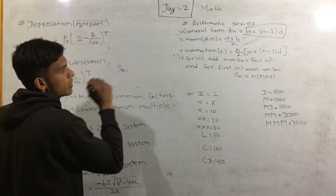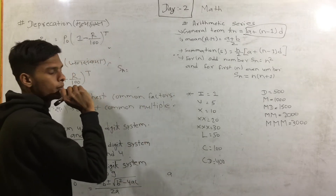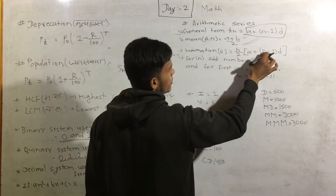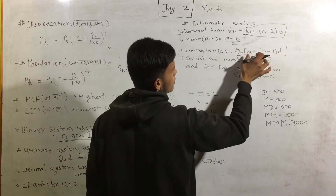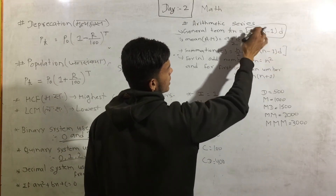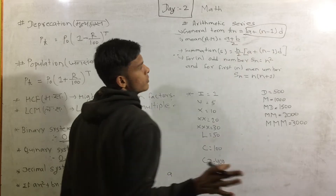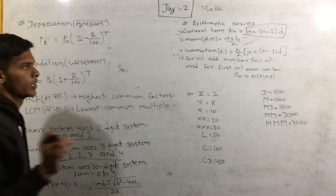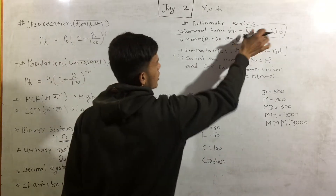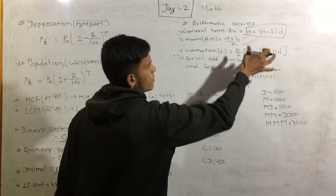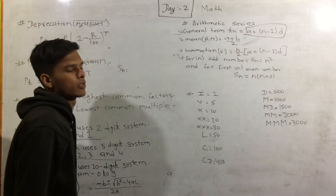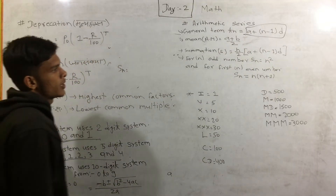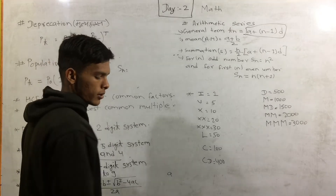This is a term — a summation term. What is the same? A plus (N minus 1) into D — this is the same. This is N by 2, then T by 2. This is a summation term. Now we have to add odd numbers and even numbers.